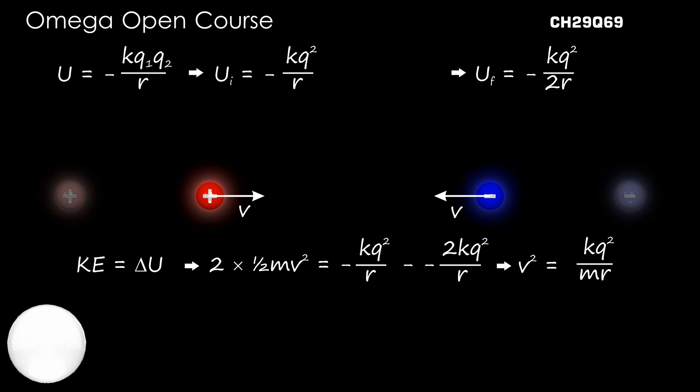Simplifying, we get V² = KQ²/(MR), or V = Q√(K/(MR)).